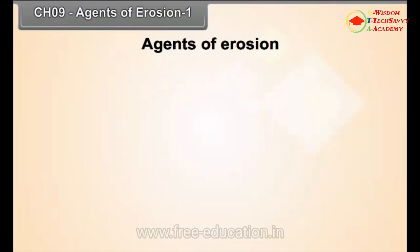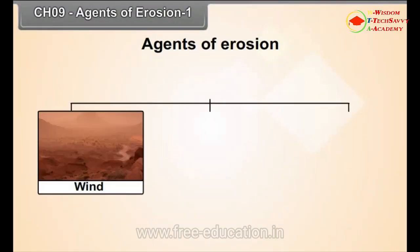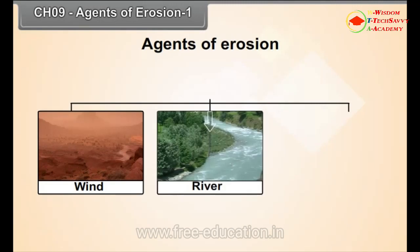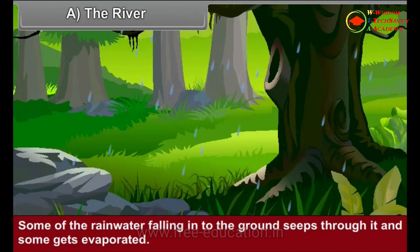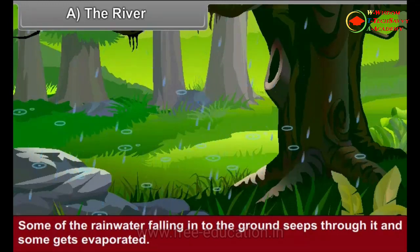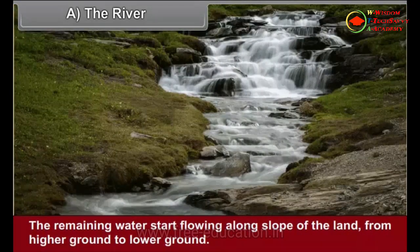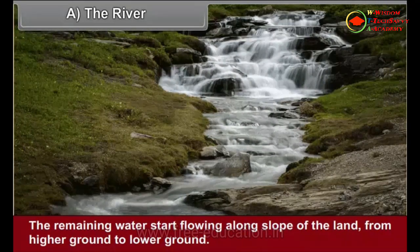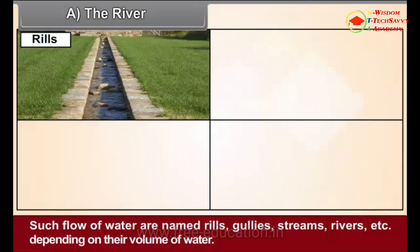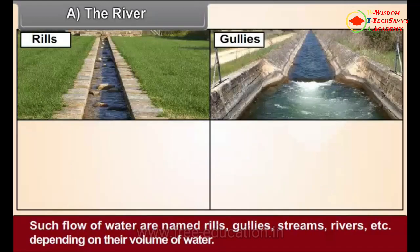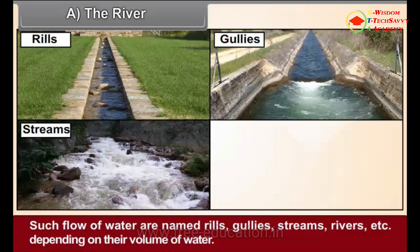In this chapter, we shall study the work of river, wind and glaciers. Some of the rainwater falling onto the ground seeps through it and some gets evaporated. The remaining water starts flowing along the slope of the land. From higher ground to lower ground, such flows of water are named rills, gullies, streams, rivers, etc., depending on their volume of water.